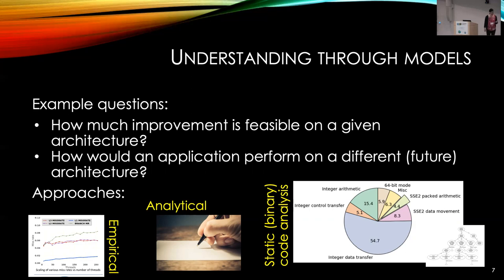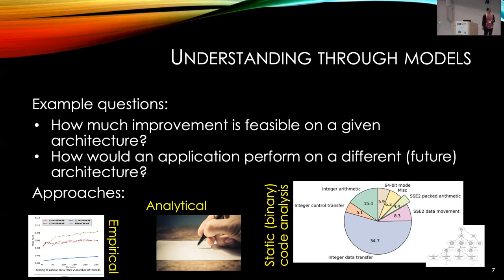We do this through modeling — some through measurement, some through pen-and-paper mathematical models of performance. You pick something like execution time and create a model that helps you characterize some behavior. We also use tools that look at the code itself to build a model of what's going on — think of them as compiler-like tools that basically take in the binary or source code and build a model based on that.